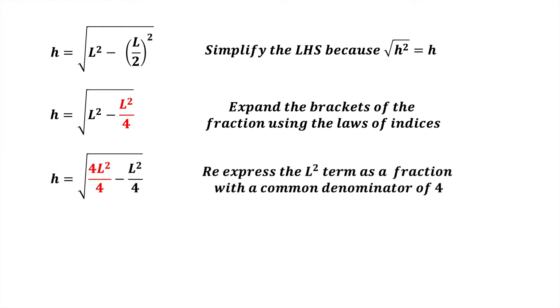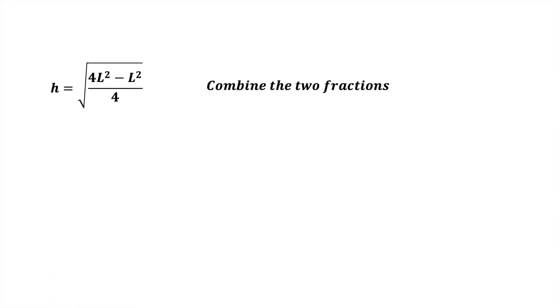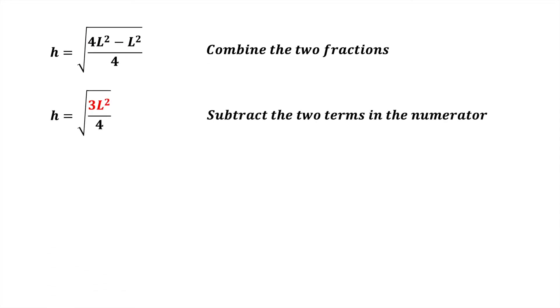Doing this makes the fraction L squared divided by 4. Then, re-express the term L squared as a fraction with a common denominator of 4. This makes the first fraction 4L squared divided by 4. We can now combine the two fractions. Now the numerator under the radical is 4L squared minus L squared.